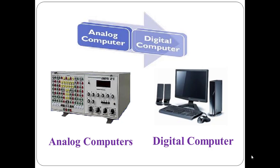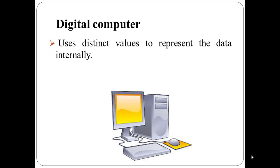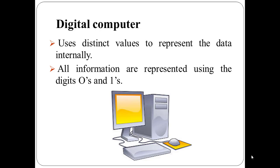Now let us have the definition of analog and digital computer. What is analog computer and what is digital computer? Digital computer uses distinct values to represent the data internally. All information are represented using the digits zeros and ones. The computers that we use at our homes and offices are digital computers.